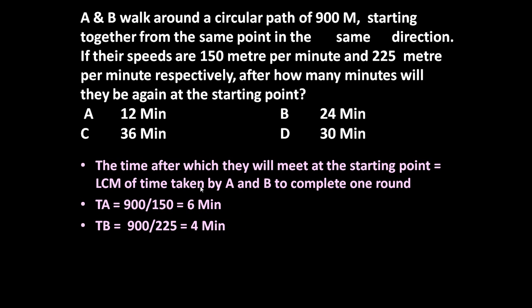Now let us see B. Time taken by B to complete one round, one round length is 900 meter, speed is 225 meter per minute. So 900 upon 225 is equal to 4 minute. Now B will take 4 minute, A will take 6 minute.